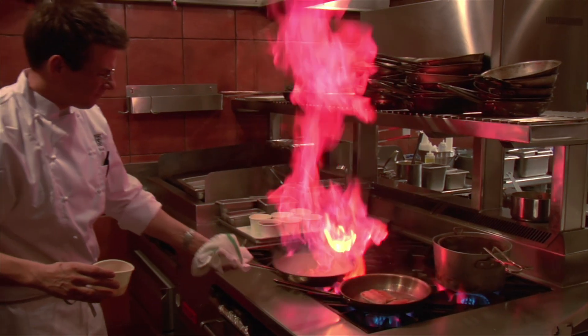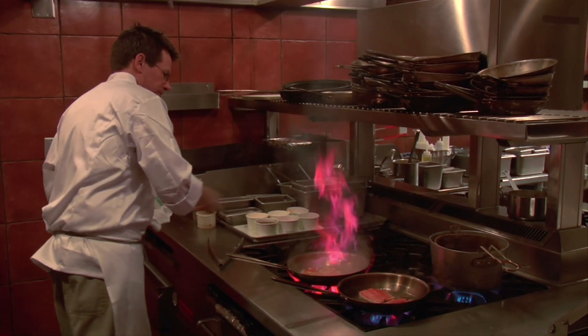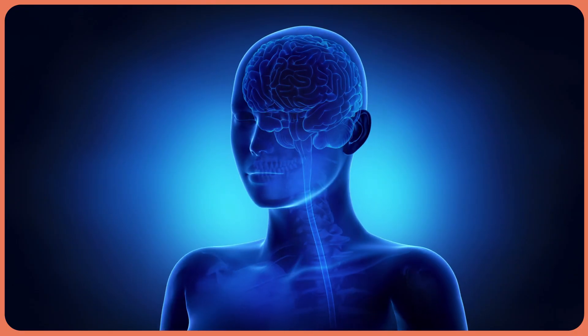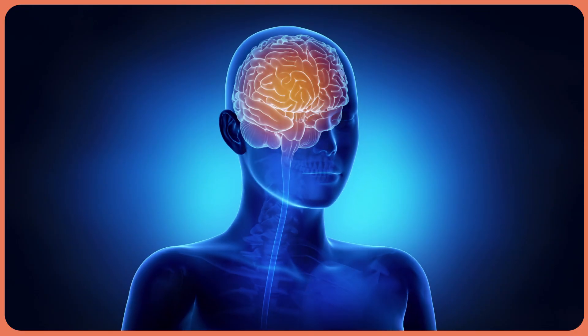We commonly refer to this message as pain, but nociceptors are kind of like the first leg of the journey that a pain signal takes to your brain. When we encounter noxious stimuli, like touching a hot stove, an electrical signal is sent up a primary afferent neuron to a part of the spinal cord called the dorsal root ganglion. There, electrical current causes a release of neurotransmitters that pass the pain signal from the primary afferent neuron to a secondary excitatory neuron. The major neurotransmitters involved in pain signaling are glutamate and substance P.